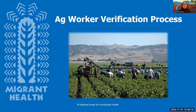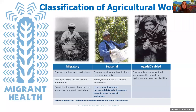Now we're going to talk through the ag worker verification process. This is a six-step process with a verification question at each step, used to accurately identify and classify a patient as either migratory, seasonal, or aged and disabled agricultural worker — or you may determine that the patient cannot be classified as an agricultural worker.